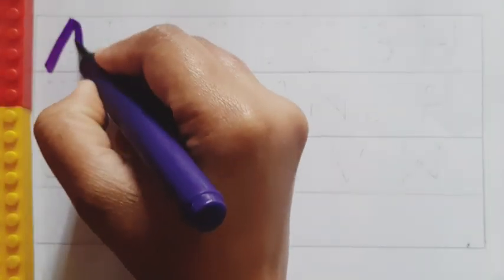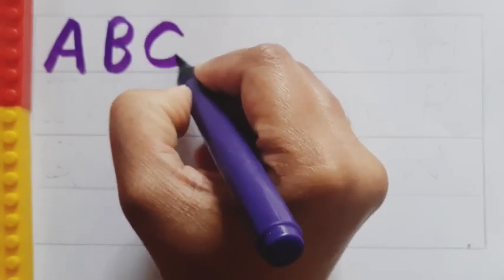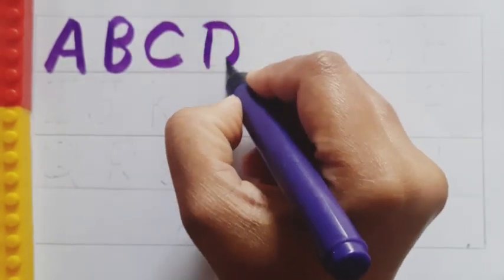A. A for apple. B. B for banana. C. C for cat. D. D for dog.